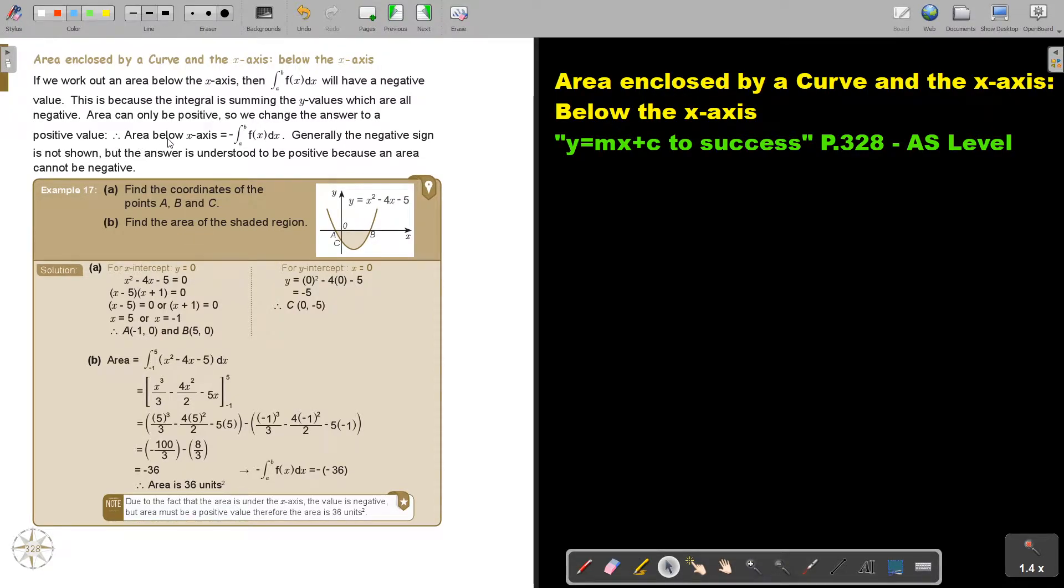Therefore, area below the x-axis, we just take that and we multiply it by negative. Generally the negative sign is not shown but the answer is understood to be positive because an area cannot be negative.